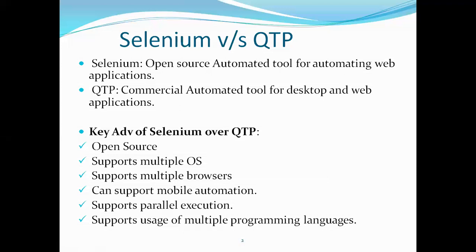Selenium supports parallel execution, which is very important from a tester's perspective. When the number of tests is huge and time is limited, parallel execution allows tests to run simultaneously across different browsers and different machines. This saves execution time, lets you rely on automation results, and allows you to share those results directly with management — saving everyone's time and money.